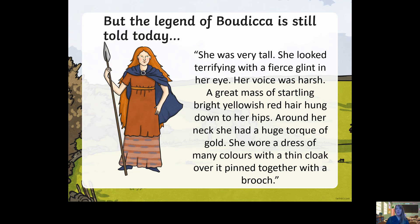Here's a description of her. She was very tall and looked terrifying with a fierce glint in her eye. Her voice was harsh. A great mass of startling bright yellowish-red hair hung down to her hips. Around her neck she had a huge torque of gold. She wore a dress of many colours with a thin cloak over it, pinned together with a brooch.